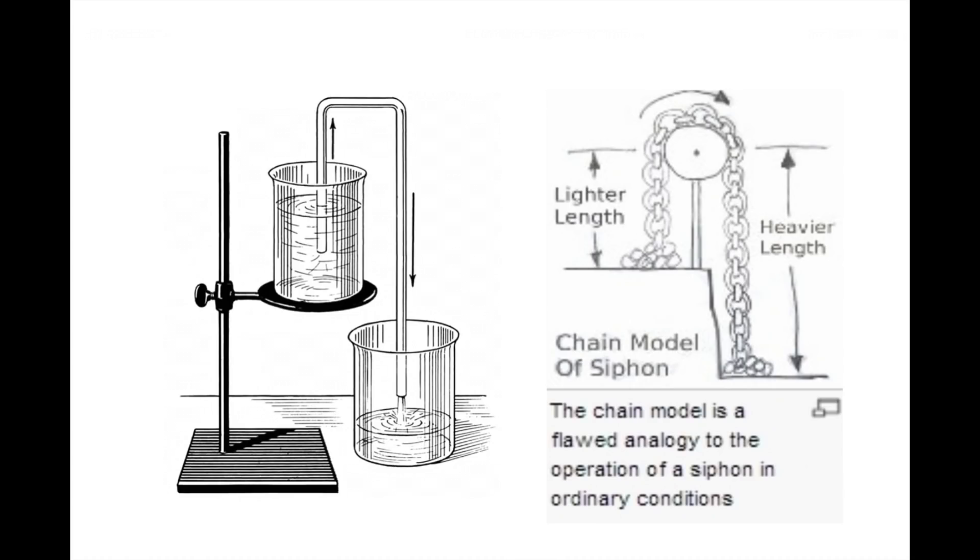Some scientists refer to this as a chain model because you can think of the water like a chain being pulled through the tube instead of a liquid. However, this theory is flawed. We'll see that a siphon still flows even when there's gaps between the particles of the liquid.